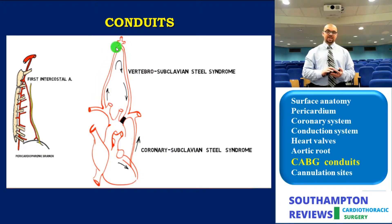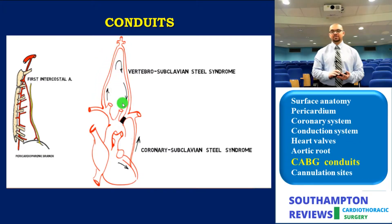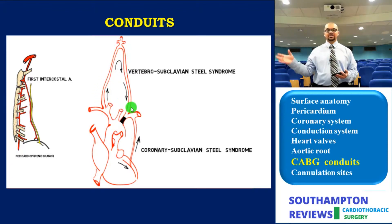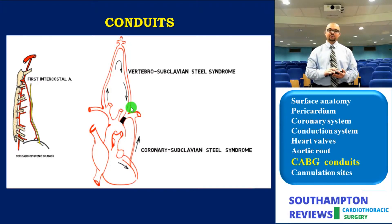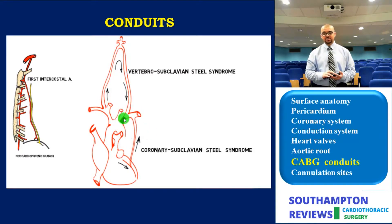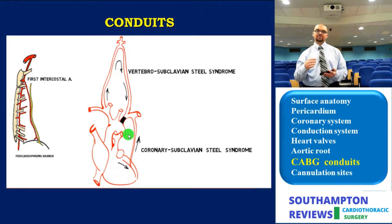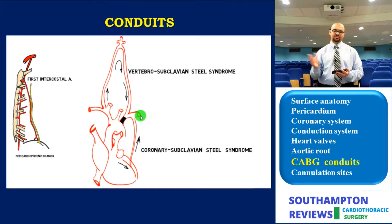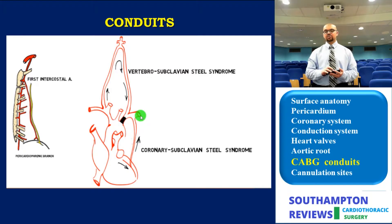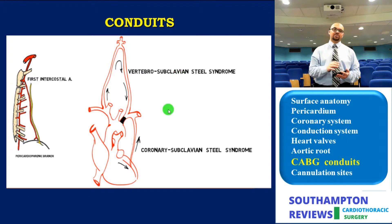The stenosis creates high resistance in the subclavian circulation, driving blood to select the path of least resistance — diverting flow from the right side through the vertebral-basilar circulation, leading to vertebral-basilar insufficiency and neurological symptoms, with normal CT and MRI findings. The second steal syndrome occurs post-CABG: blood opts for the path of least resistance through the coronary arteries, diverting into the subclavian circulation due to its larger diameter and lower resistance. The first steel syndrome occurs in native circulation; the second happens postoperatively after a CABG procedure.